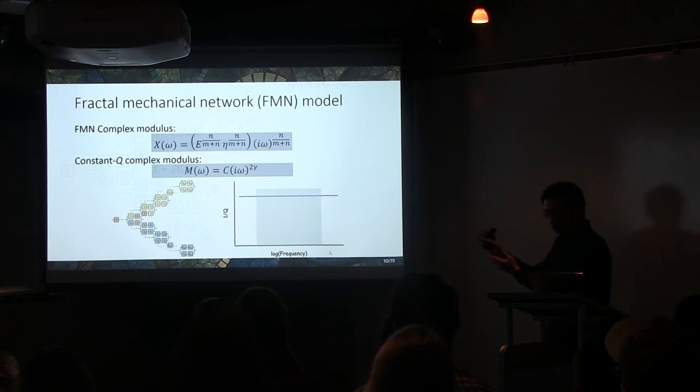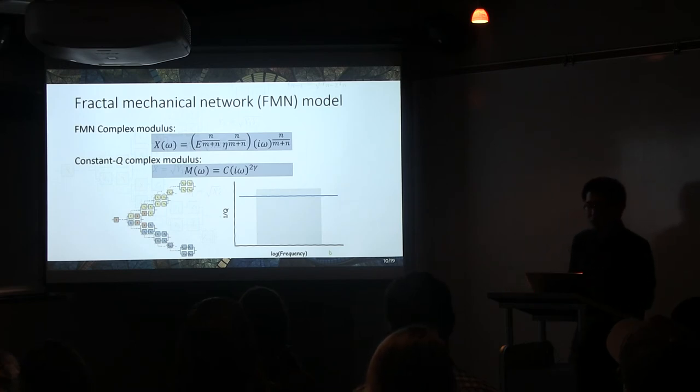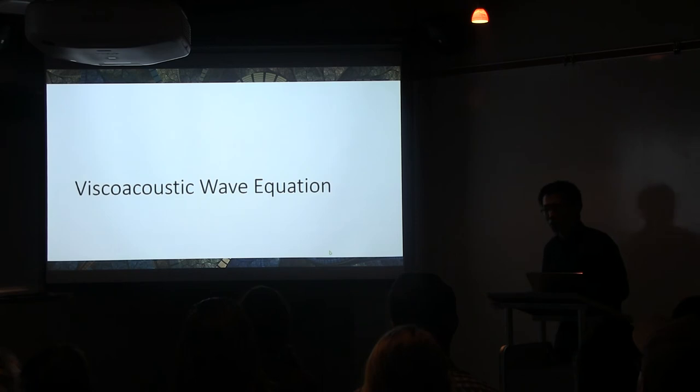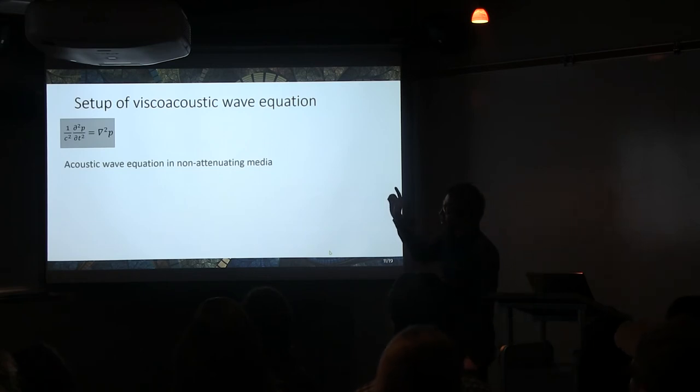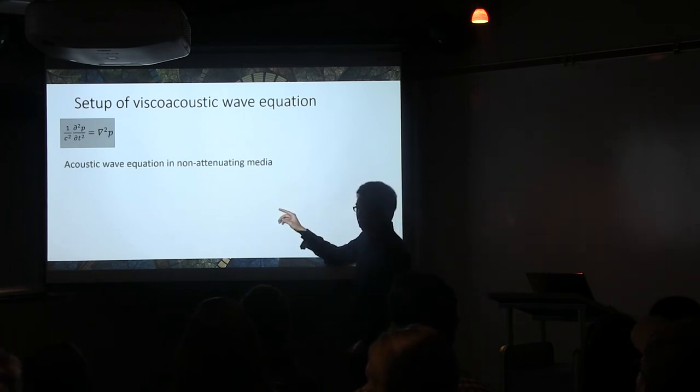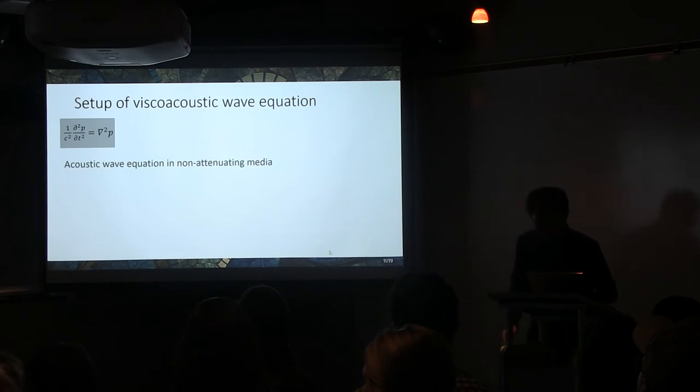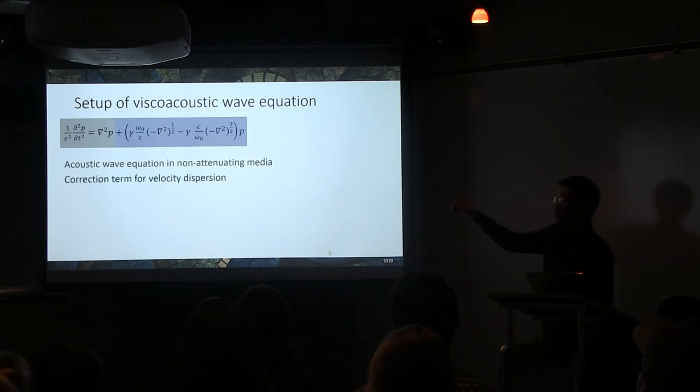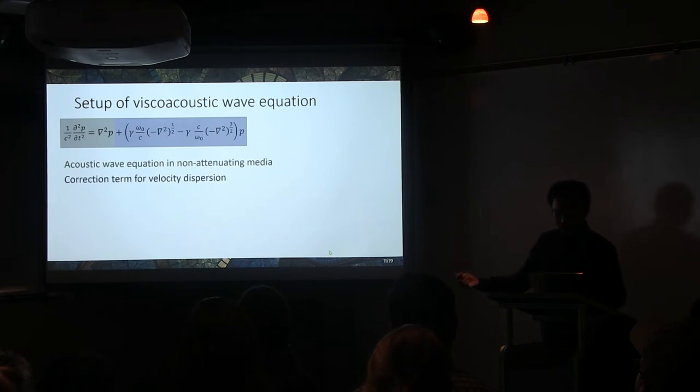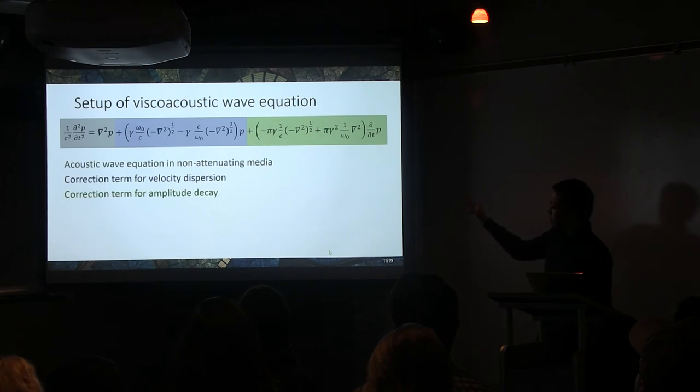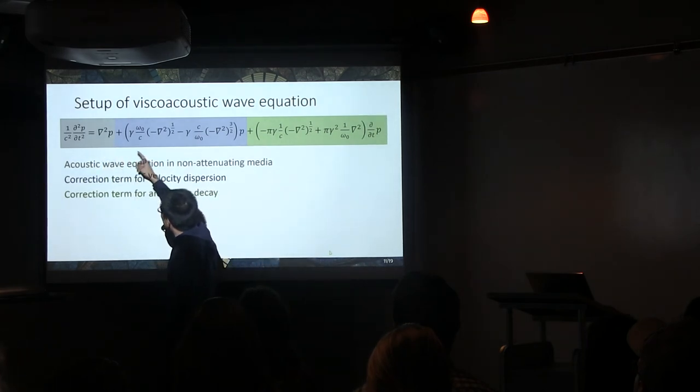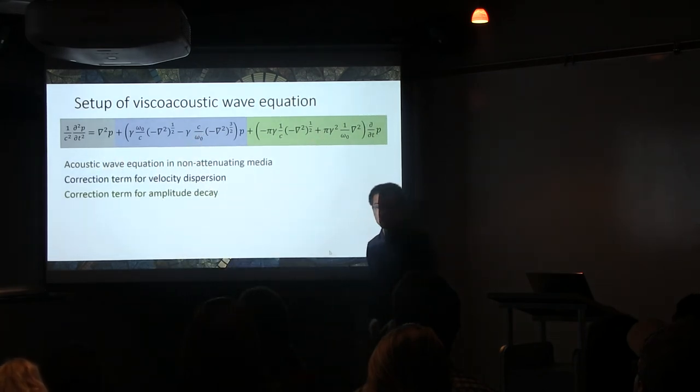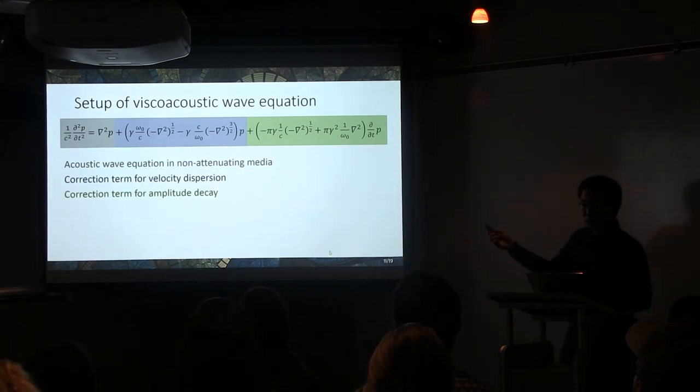And based upon this model, after a very non-trivial derivation, we end up with a viscoacoustic wave equation to model the attenuation wave field. And we set up this wave equation starting from the vanilla version, which is the classic acoustic wave equation. And this is the wave equation in a non-attenuating area. And we add a fractional term to take into account the velocity dispersion, one of the attenuation effects. Moreover, we add another fractional term to incorporate the amplitude decay. So, the non-attenuation equation plus the velocity dispersion plus the amplitude decay. Together, we got a new viscoacoustic wave equation.